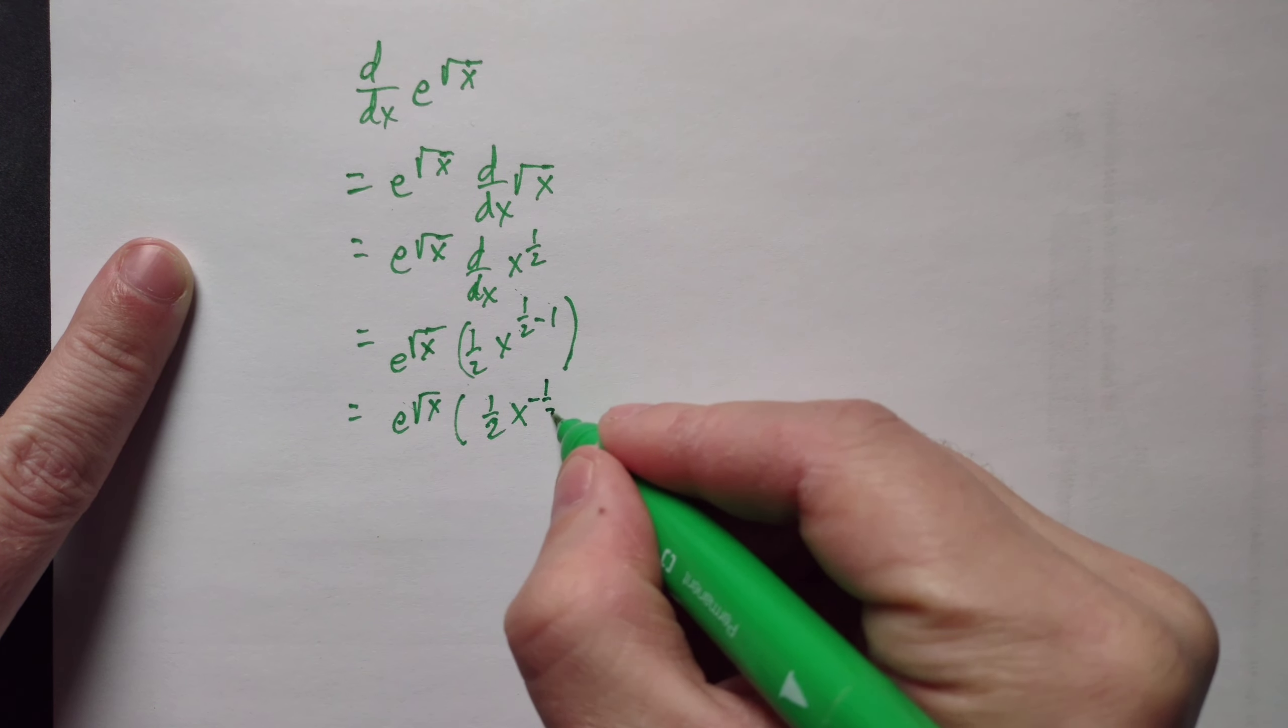And then we continue, so it's e to the root of x, and then we have 1 over 2, and it's x raised to the negative 1 half, that's the meaning of negative exponents, and then lastly, we write this in root form as e to the root of x over 2, and then the root of x this way.